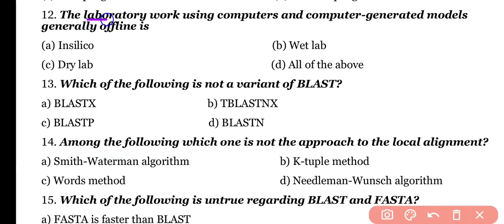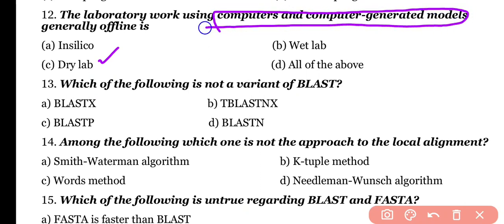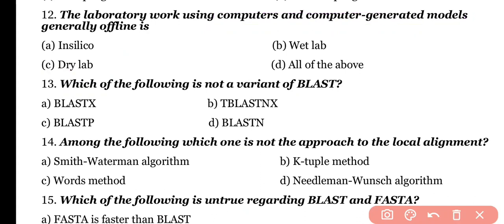Question number 12. Laboratory work using computers and computer-generated models, generally offline, is called: in silico, wet lab, dry lab, or all of the above? Correct answer is option C. Laboratory work in which we use computers or computer-generated models offline is called dry lab.